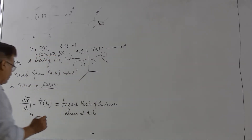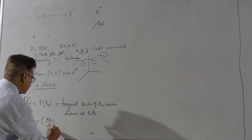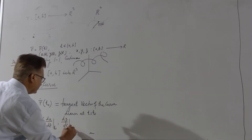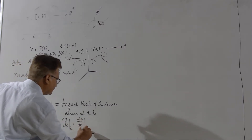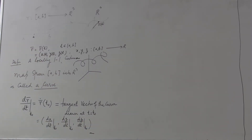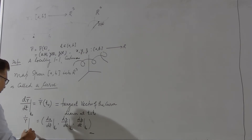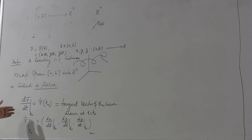To find the components of the tangent vector, you just differentiate the components. They turn out to be dx/dt at t₀, dy/dt at t₀, and dz/dt at t₀. These are the components of the tangent vector r-dot at t₀.